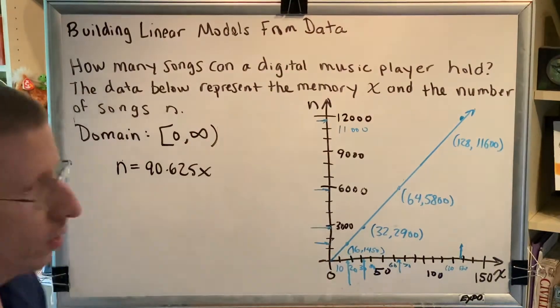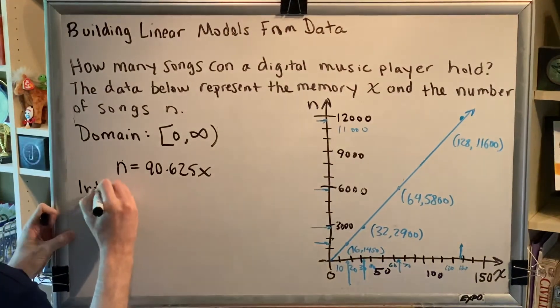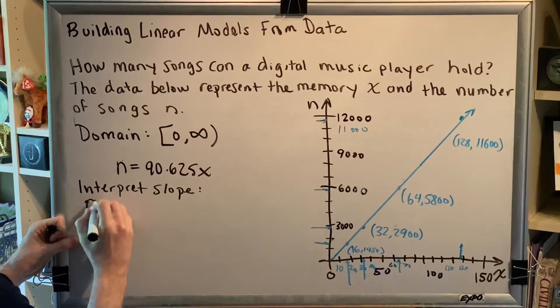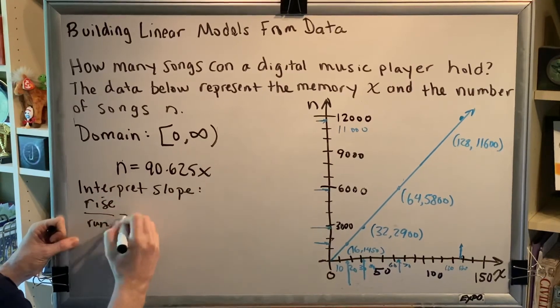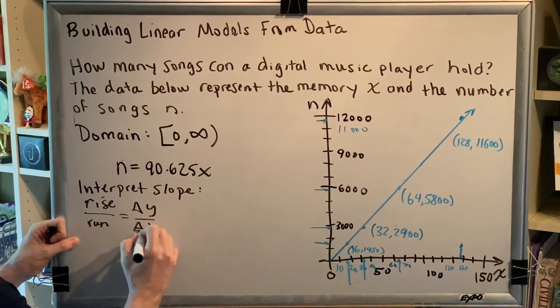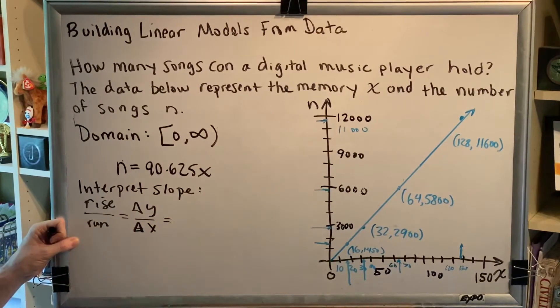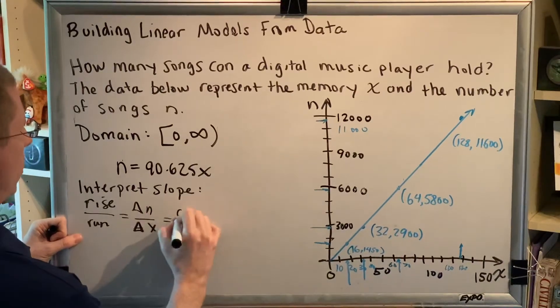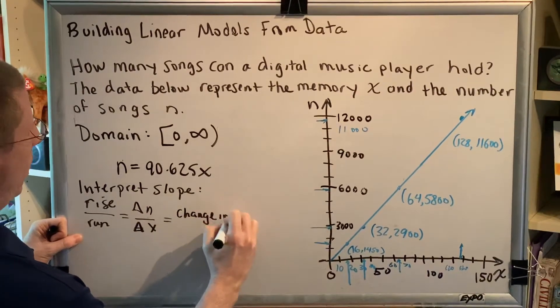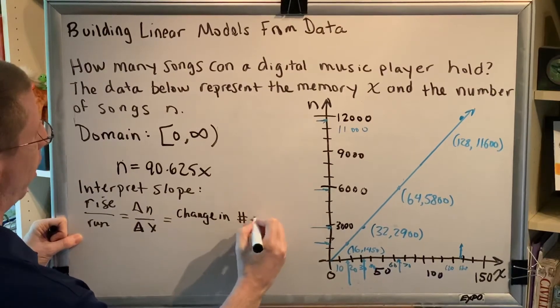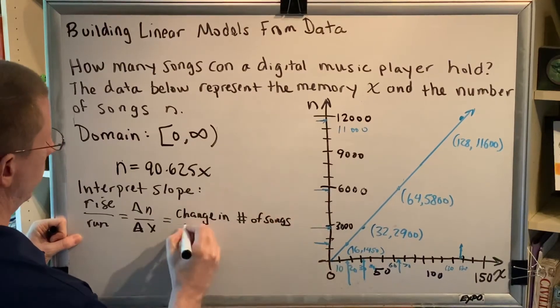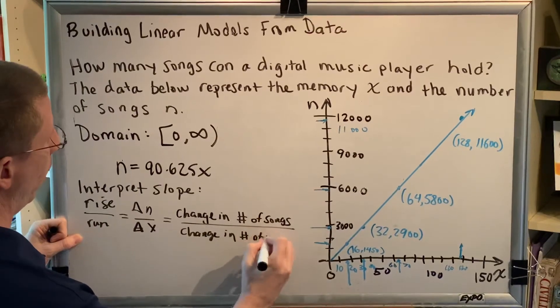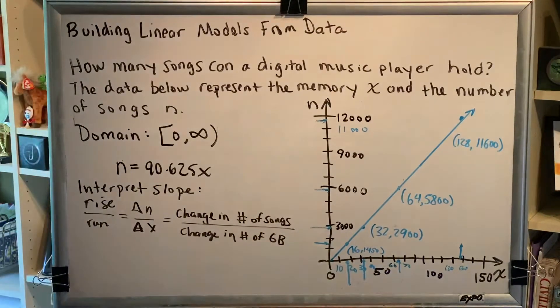And then finally, interpret the slope. So interpreting slope is very easy. You just have to remember that slope is rise over run. So let's go ahead and do that. So slope is rise over run. Rise is a change in the y variable. Run is a change in the x variable. Of course in this particular problem, there is no y, there's just n. So I'm going to erase that y, I'm going to put an n there in its place. So change in n, which is the number of songs, divided by the change in x, which is the number of gigabytes.